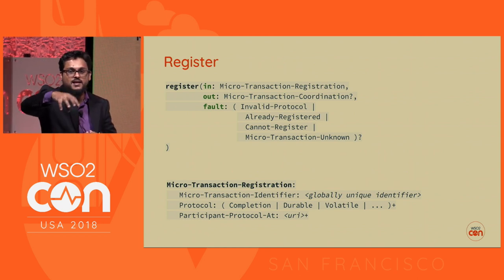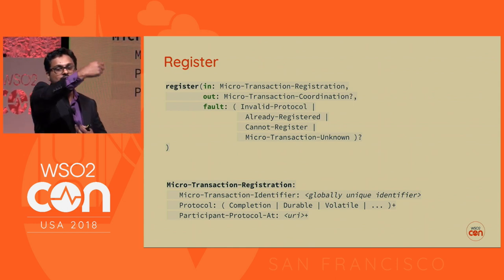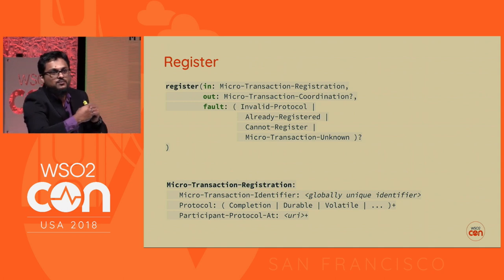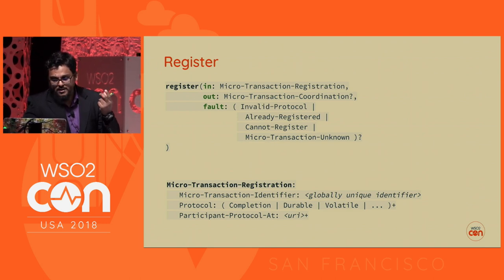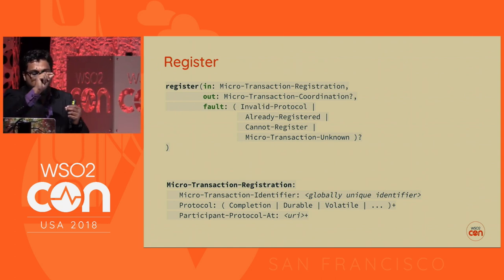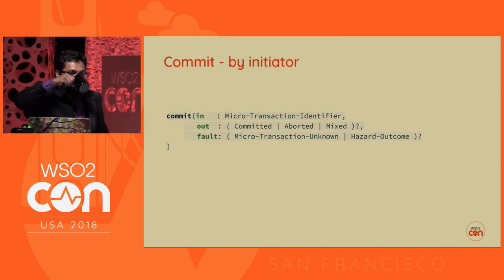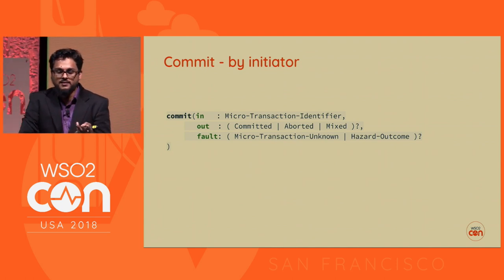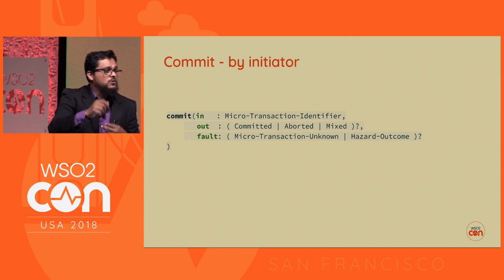This is called the microtransaction registration flow. Each infected node does the registration first. Microservice one calls two, so two comes and registers with the coordinator of microservice one. Then two calls three, and three registers with the coordinator of microservice one, and so on. At the end of the day, the coordinator of microservice one — which initiated the transaction — has pointers to all services in the system. We have completed the sphere of control: created the context, completed the registration flow, and now need to do the protocol flows — either commit or abort.